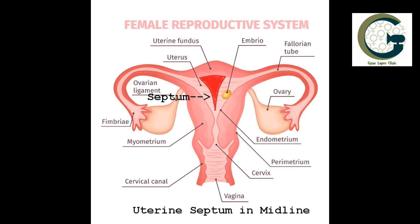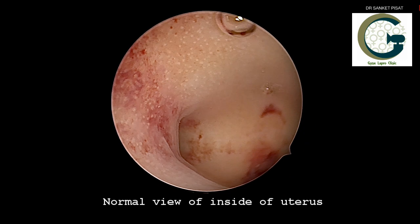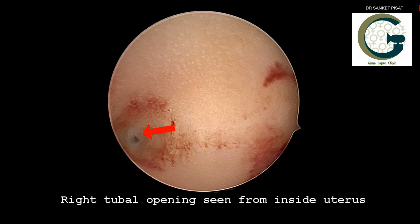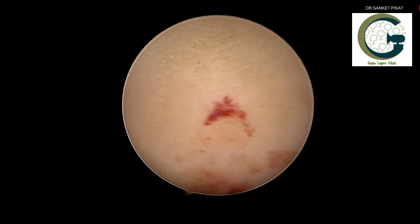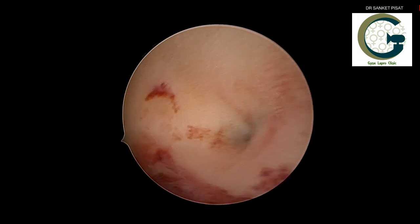Some patients have a localized overgrowth of the muscle in the center of the uterus, also referred to as the uterine septum. This is a midline projection seen from the top of the uterus. This is the normal view of the inside of the uterus which is a spacious hollow cavity with the right tubal opening and the left tubal opening seen from inside the uterus. So, there is one single large cavity and two openings seen on either side.